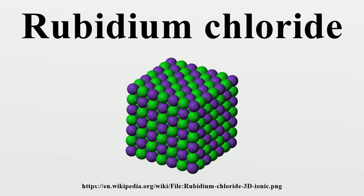In its gas phase, RbCl is diatomic with a bond length estimated at 2.7868 Å. This distance increases to 3.285 Å for cubic RbCl, reflecting the higher coordination number of the ions in the solid phase.